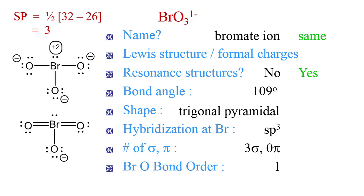Notice, though, that there are still four electron groups around bromine. So the bond angle is still 109 degrees. The shape is still trigonal pyramidal.